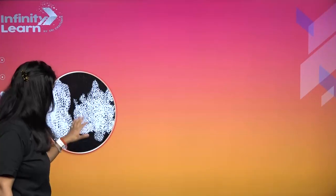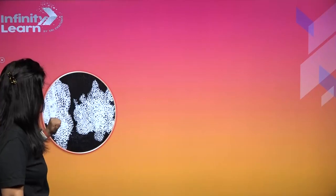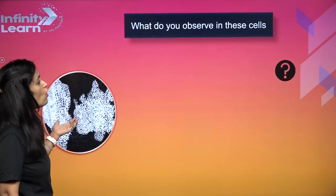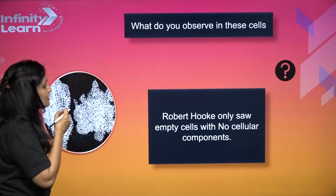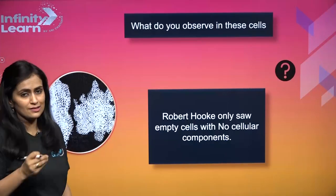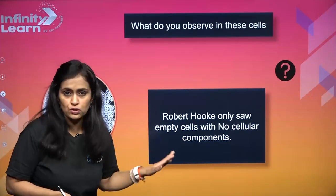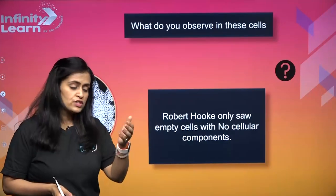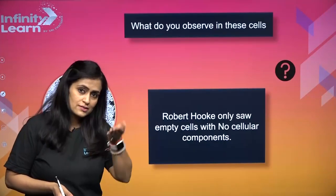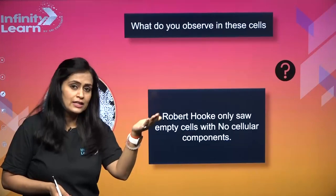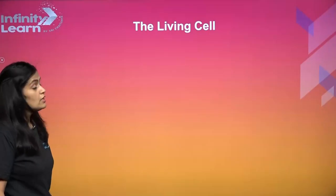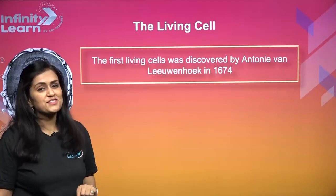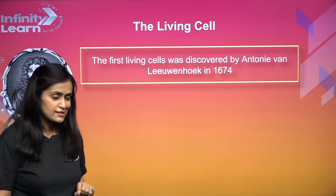Let's see what he actually observed - these are his original drawings from his paper. He just observed empty boxes - empty cells. There was no cytoplasm, there was no nucleus, nothing. Why? Because he was observing cork, which is the bark of trees - already dead cells. So he observed dead cells. Now, what about the living cells? Who observed the living cells for the first time?